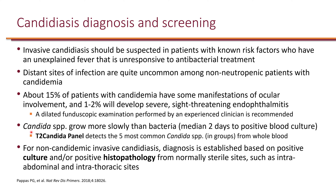When it comes to blood culture, it is important to note that candida grows slower than most bacteria. When we have blood cultures for bacteria, typically we get the gram stain pretty much the same day. For candida, it may take a couple of days before we can even get any type of staining under microscopy — so that delays the process. One rapid diagnostic we have is the T2 candida panel, which can detect the five most common candida species. It reports them in groups — it might not tell you exactly which of the five, but it can do it directly from whole blood without waiting two days for colonies to grow.